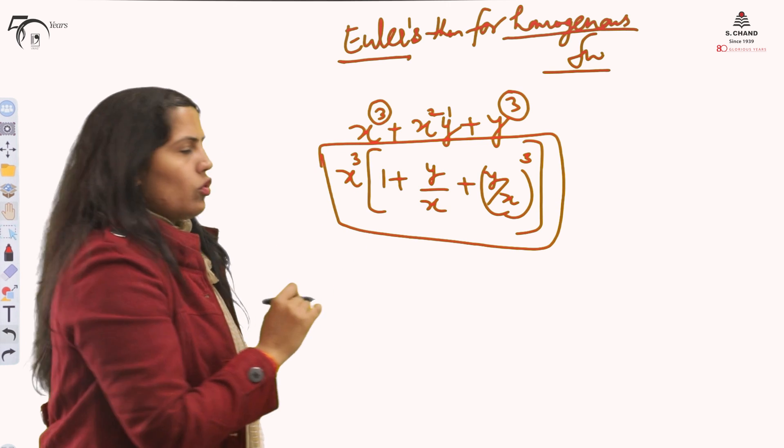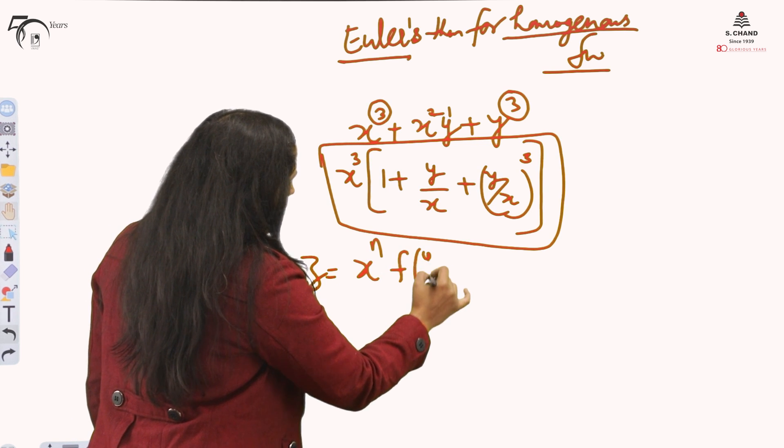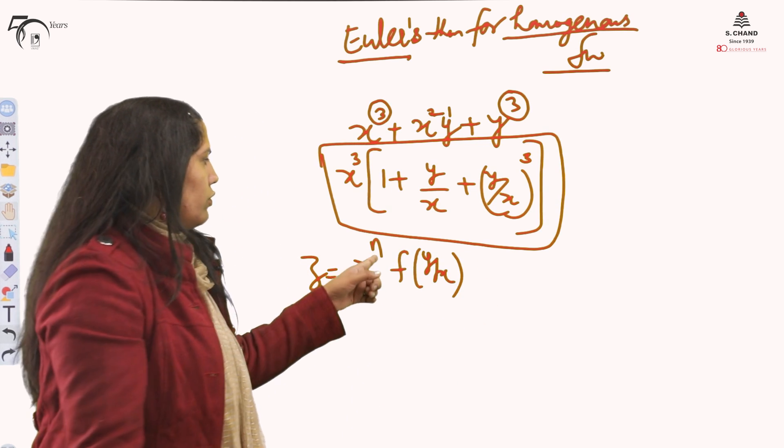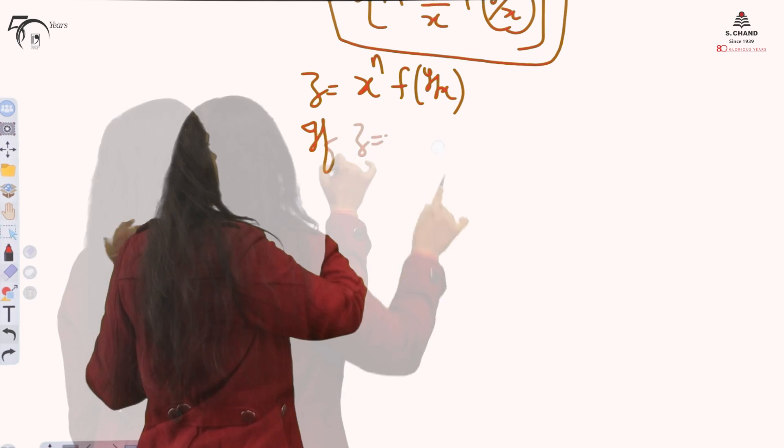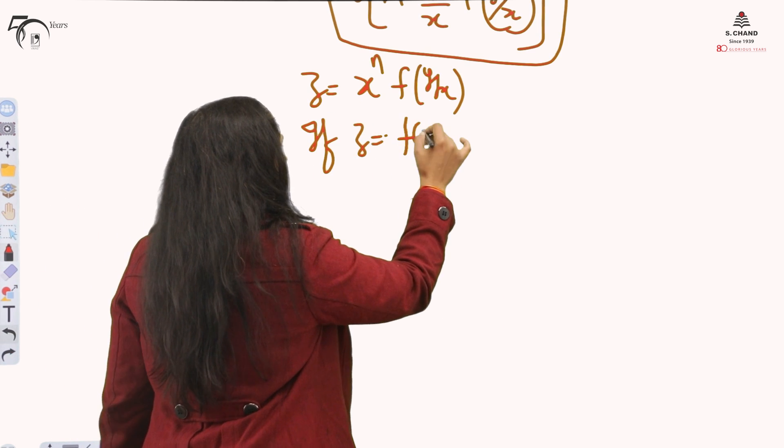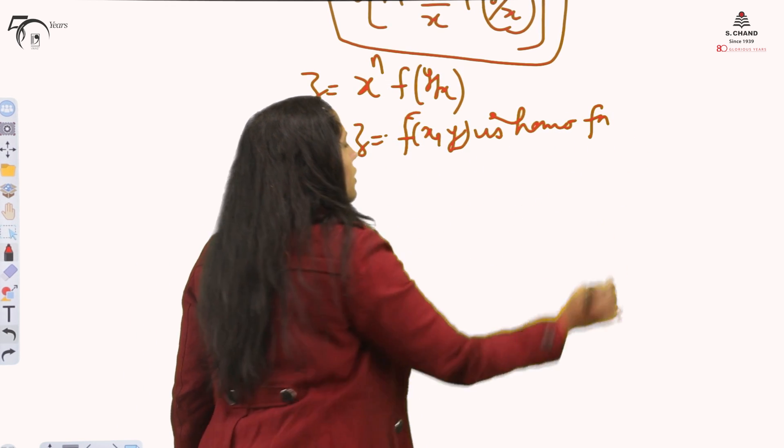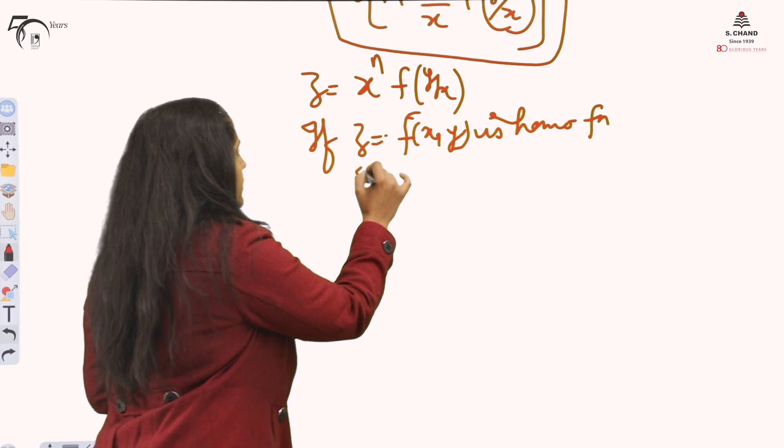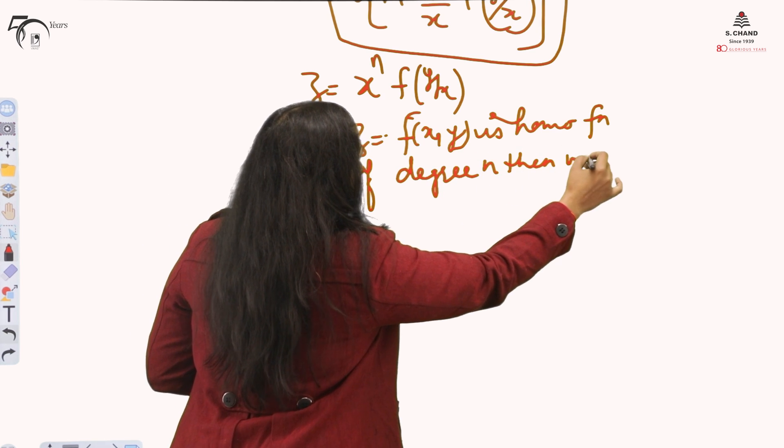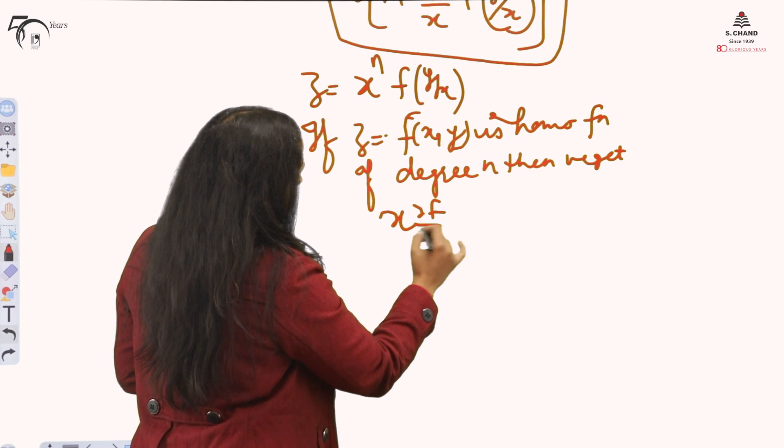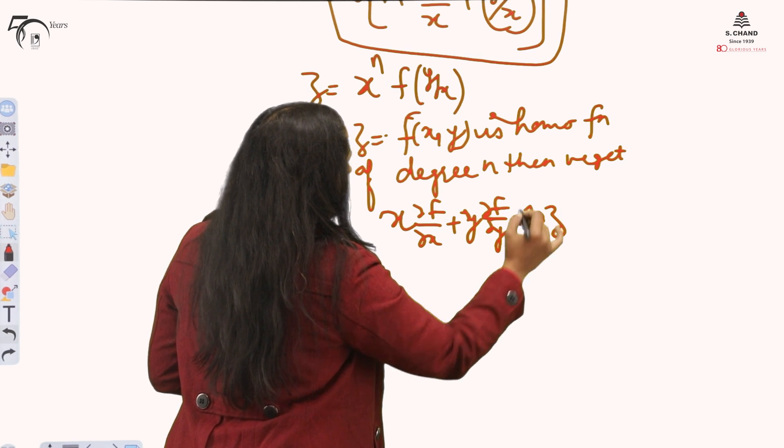This type of expression is called homogeneous function. It means if your function z is in this form, you say that is homogeneous function of degree n. If z equals f(x,y) is homogeneous function of degree n, then we get x del f by del x plus y del f by del y equal to n z.